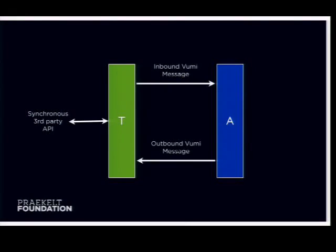One big benefit of Twisted is that you can wait. When you're coming from Django, you cannot afford to wait — everything needs to be handled as soon as possible, otherwise servers back up. With Twisted, because it's asynchronous, you can wait for stuff. For example, some aggregators want a synchronous response when they hit us with an SMS — they expect us to reply in the actual HTTP response. Because we're async on the inside, the transport keeps that HTTP connection open the whole time without breaking a sweat. As soon as the outbound message arrives, the transport sends it out via that request and closes the connection.